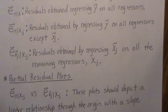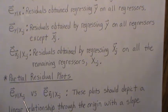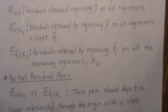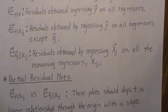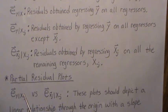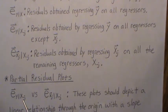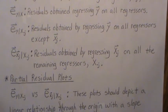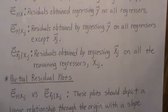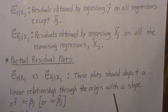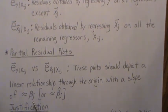The partial residual plot looks at the residuals from regressing y onto all the regressors except for j, and then regressing xj onto all the other regressors. This removes the relationship of all the other regressors, so what's left is the pure relationship between xj and y. These plots should depict a linear relationship through the origin with a slope of beta j.